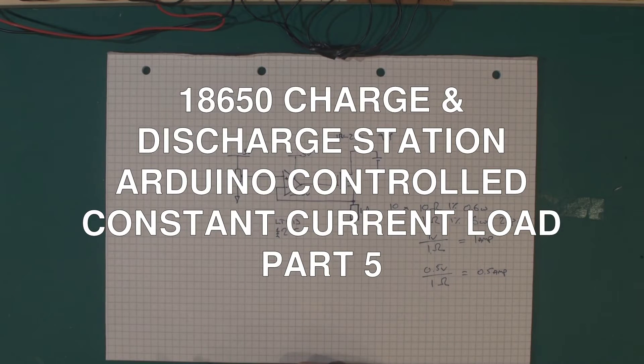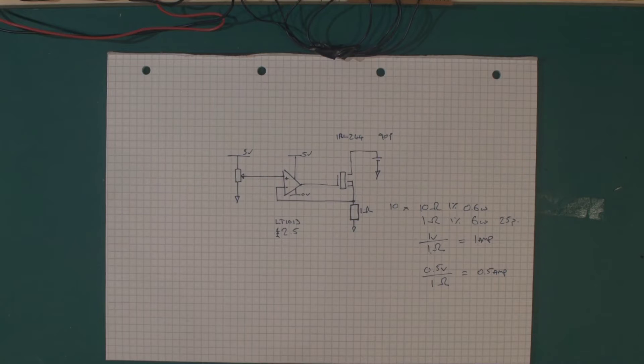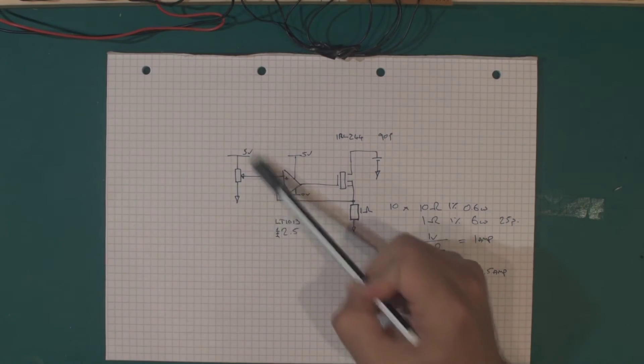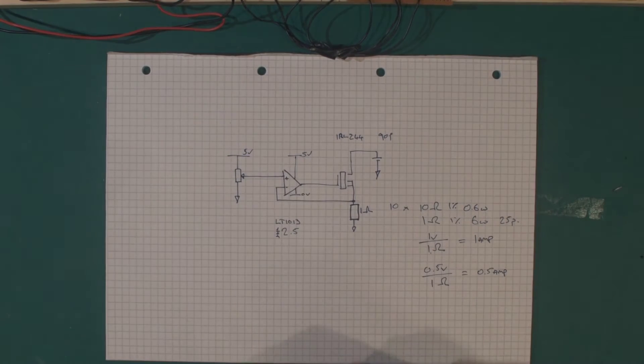Hey, welcome back to the bench. In the previous video we went through this constant current discharge circuit. This time around I want to improve that by controlling it from the Arduino on the discharge station and remove this potentiometer from the beginning.